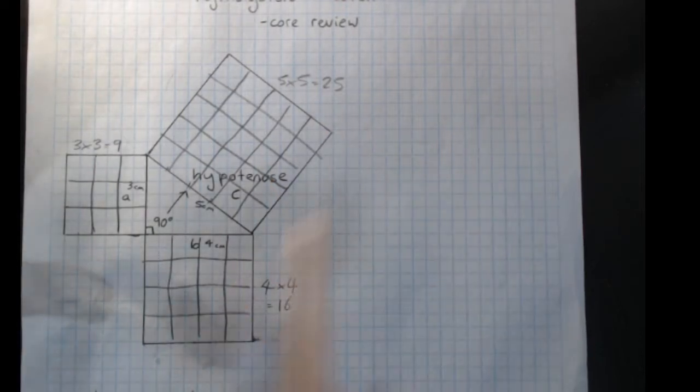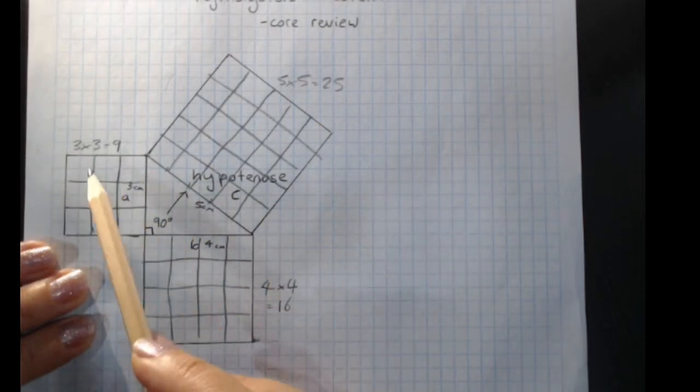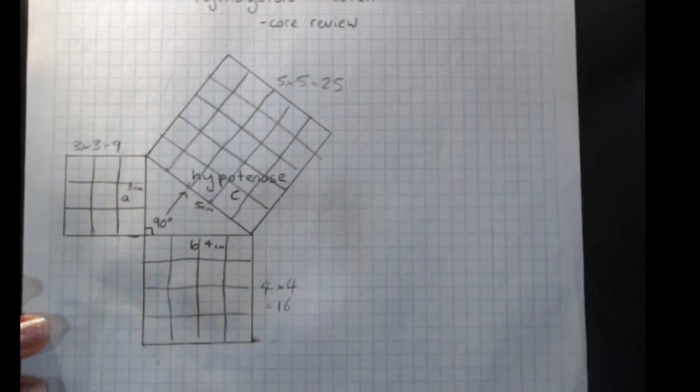Now you can prove this or show this in all sorts of ways. You can cut up the little squares and fit everything that fit in there into that big square. You can do that in all sorts of ways with triangles and stuff.